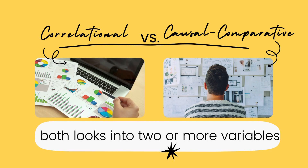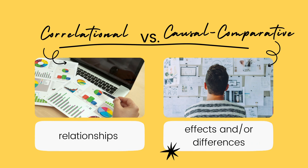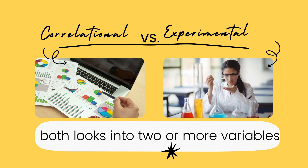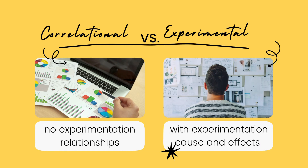For correlational versus causal comparative: both look into two or more variables. However, correlational looks into relationships, while causal comparative studies cause and effect. For correlational versus experimental: both look into two or more variables. However, for correlational, there is no manipulation of data and it looks into relationships, whereas experimental research manipulates variables and determines cause and effect.